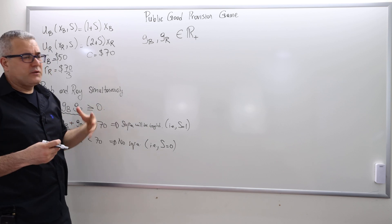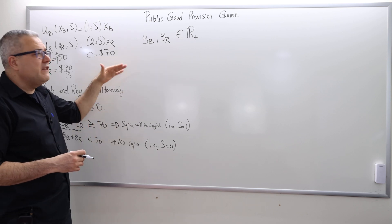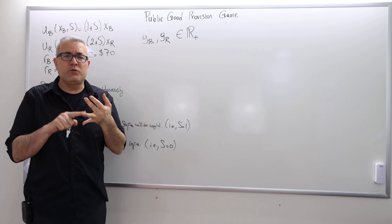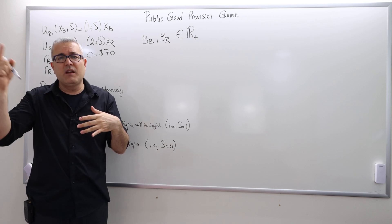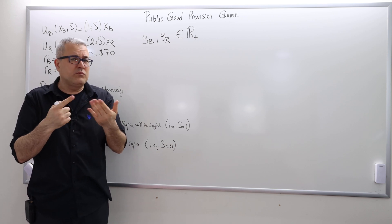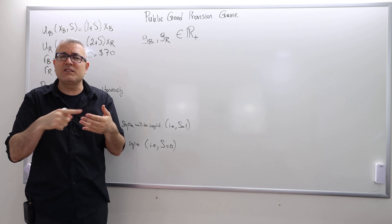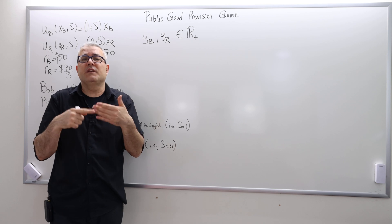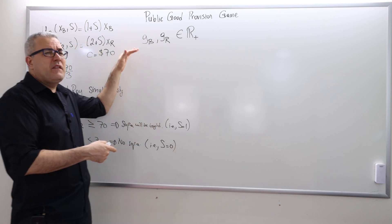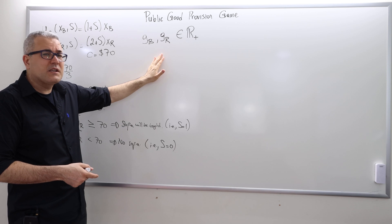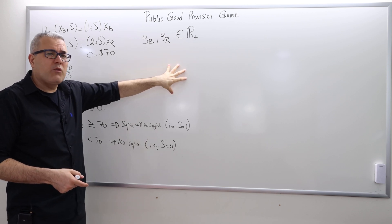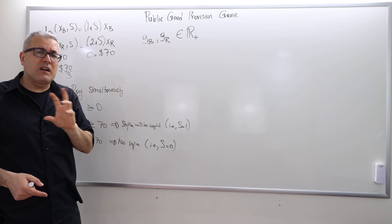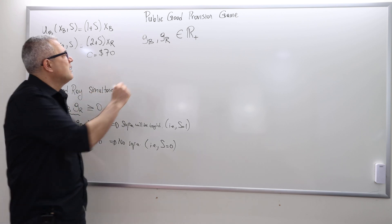For this game it's impossible to draw the matrix form because there are infinitely many strategies. You can contribute zero dollars, one dollar, two dollars, three dollars — and actually, what about 50 cents or 10 cents? Any number between zero and one dollar is admissible, so there are infinitely many possible strategies for both players. We can't really draw the matrix form; in that sense it's a relatively hard game.